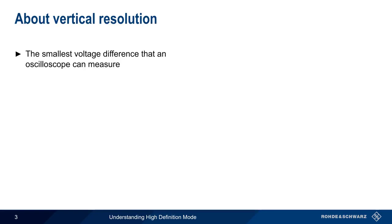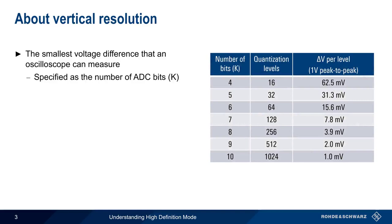Let's begin by reviewing vertical resolution. We can define vertical resolution as the smallest voltage difference that can be measured by an oscilloscope, and vertical resolution is normally specified as the number of bits in the scope's analog-to-digital converter, or ADC.